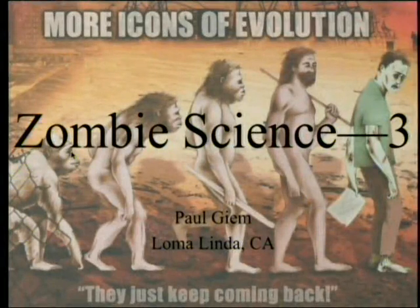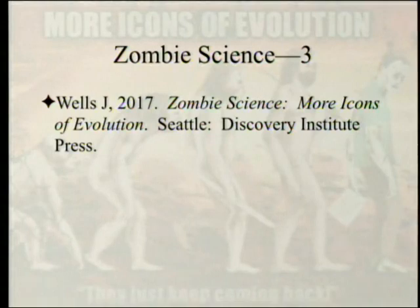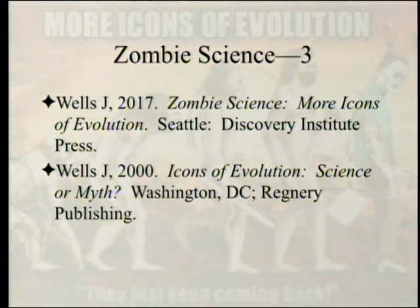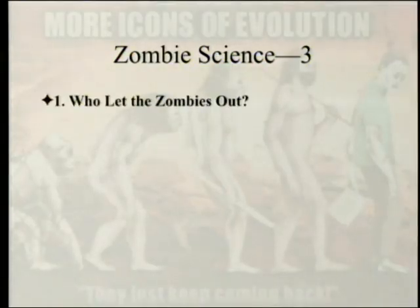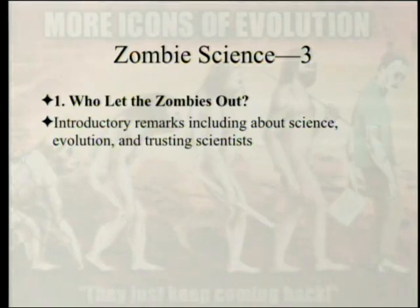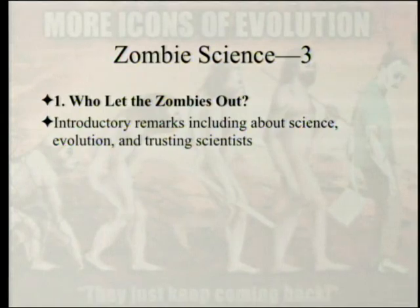Zombie science part 3. We've been going through a book by Jonathan Wells called Zombie Science: More Icons of Evolution, which is a follow-up of Jonathan Wells' book from 2000, Icons of Evolution: Science or Myth. Chapter 1 was 'Who Let the Zombies Out,' which includes introductory remarks about science, evolution, and trusting scientists, paralleling the book by Chris Roop and John Sanford.